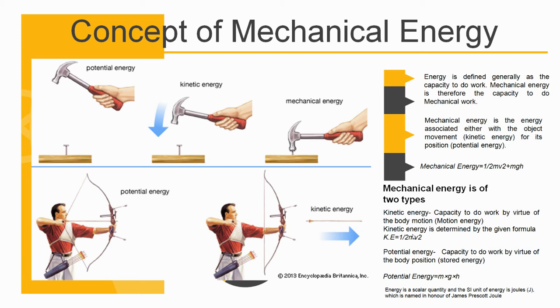The mechanical energy is determined by the following formula: mechanical energy equals half mv square plus mgh. The unit of mechanical energy is same as the unit of mechanical work, that is joules in metric system.